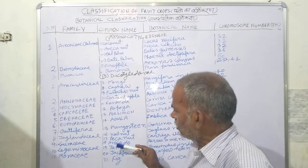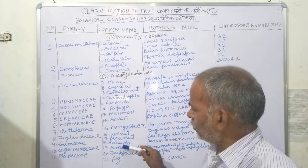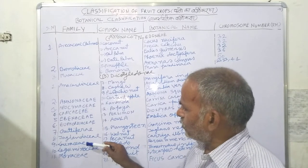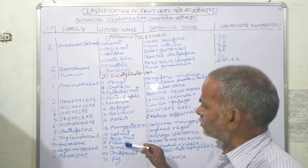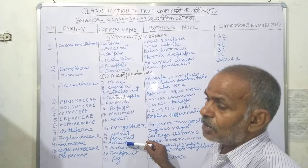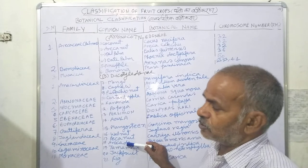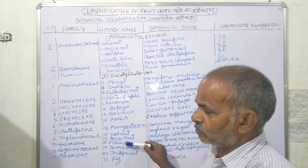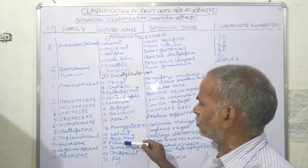Avocado belongs to the Lauraceae family. Its botanical name is Persea americana, and the chromosome number is 24. Avocado is considered a very good fruit for diabetes patients.